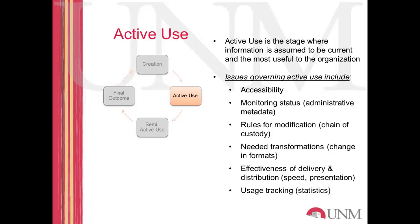Active use assumes that the information created in the previous stage has been formatted and distributed to an audience of users who will find it valuable. There's a lot that's implied in the shifting from creation to active use, and here are some of the issues that need to be dealt with during an information object's active use.